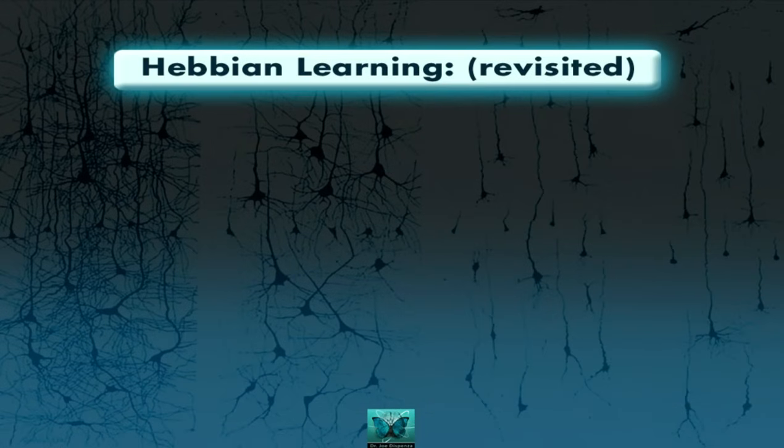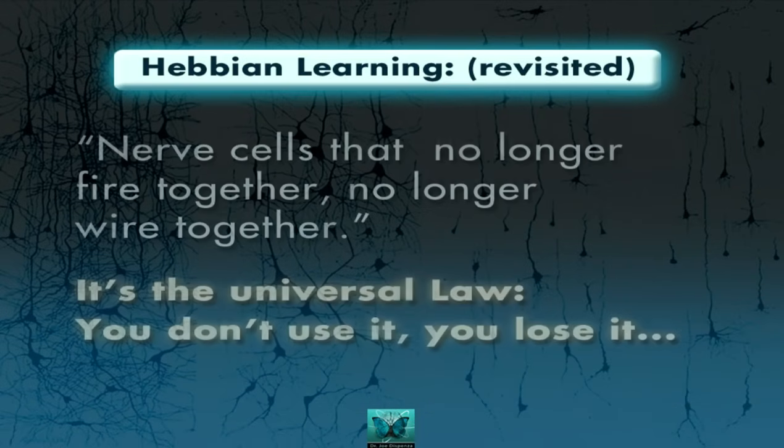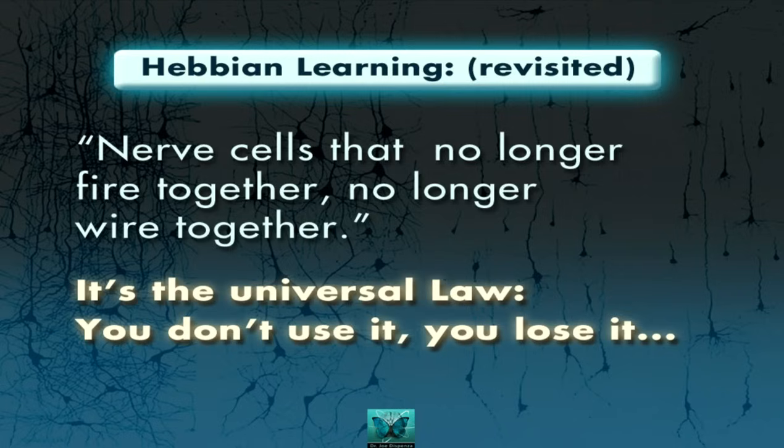So there is also another principle in neuroscience called Hebbian learning, but it's actually the opposite. It says nerve cells that no longer fire together no longer wire together, and the universal law is you don't use it you lose it.